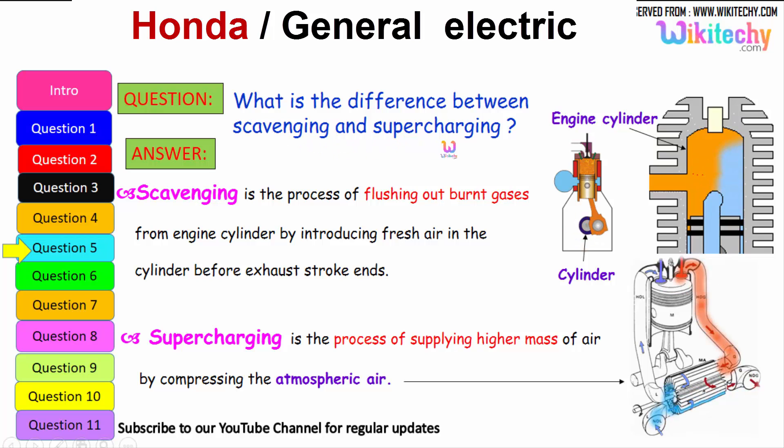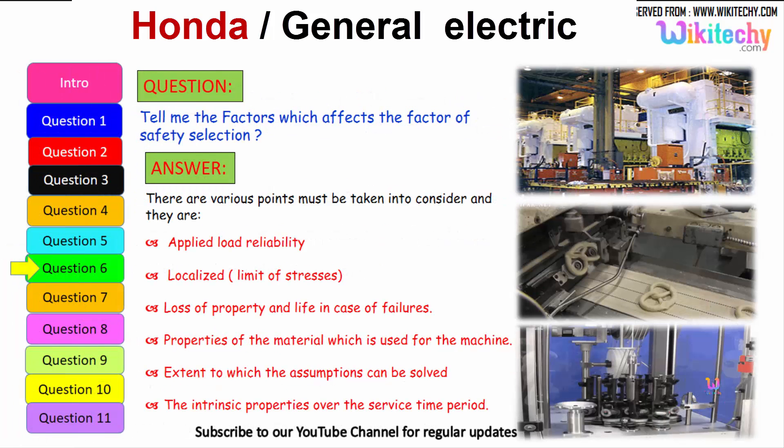Let us move on to a different question. What is the difference between scavenging and supercharging? Scavenging is the process of flushing out the burnt gases from the engine cylinder by introducing fresh air in the cylinder before the exhaust stroke ends. Supercharging is the process of supplying high masses of air by compressing the atmospheric pressure. High pressure air is injected into the cylinder to compress the atmospheric air.